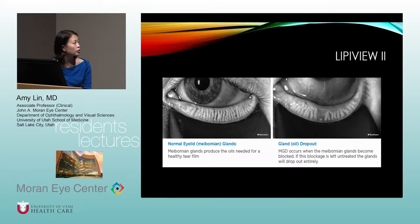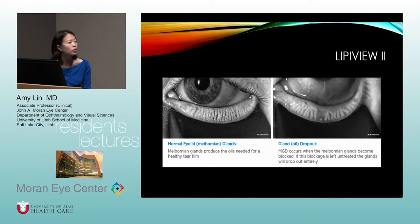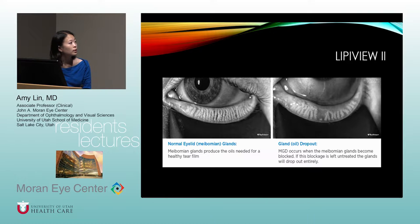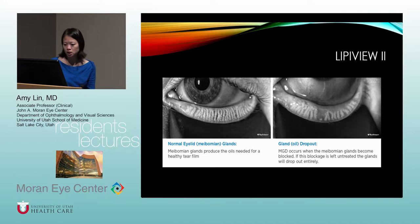On the left you've got normal meibomian glands — you can see all those oils there. On the right you can see meibomian gland dropout, with far fewer lipids in the meibomian glands.